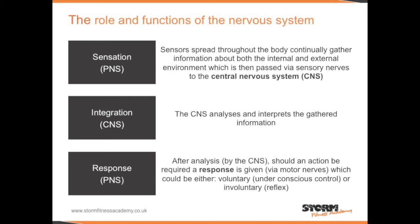The role and functions of the nervous system. There are three roles or functions of the nervous system: sensation, integration, and response. Sensors spread throughout the body continually gather information about both the internal and external environment, which is then passed via sensory nerves to the central nervous system.